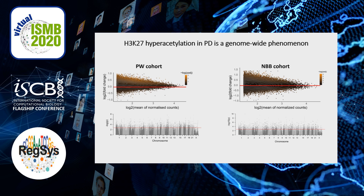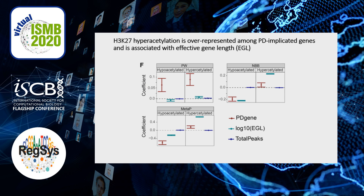After adjusting for cell composition and demographic and technical factors, in both cohorts we observed general H3K27ac hyperacetylation distributed genome-wide, as can be observed in the MA plot. However, despite the genome-wide nature of H3K27ac hyperacetylation, we observed a much more pronounced hyperacetylation among genes implicated in PD, either functionally or based on GWAS studies. This was observed regardless of whether we analyzed each cohort individually or when we used the combined data in meta-analyses.